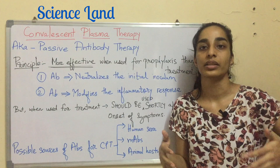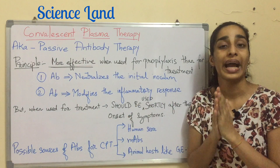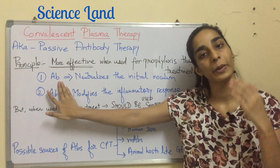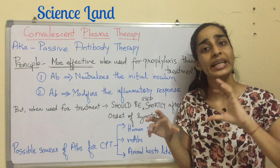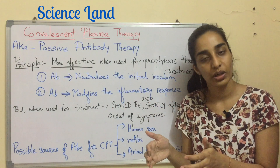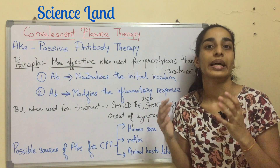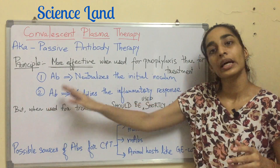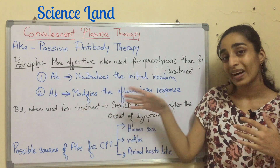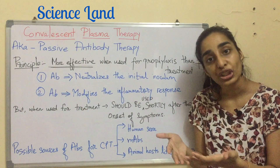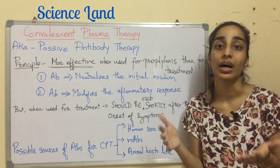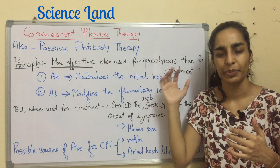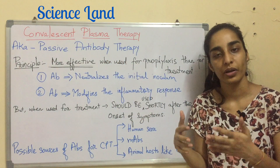Convalescent plasma therapy is generally more effective for prevention than for treatment of the disease. The exact reason is not completely understood, but there are two possibilities. First, when the antibody is injected, it works by neutralizing the initial inoculum, which is small in the earlier stages, so the disease is contained before it becomes established. Second, the injected antibodies modify the inflammatory response, which is more easily achievable in the earlier or asymptomatic stages.